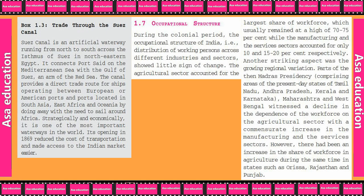Another striking aspect was the growing regional variation. Parts of the then Madras Presidency — comprising areas of present-day Tamil Nadu, Andhra Pradesh, Kerala and Karnataka — Maharashtra and West Bengal witnessed a decline in the dependence of the workforce on the agriculture sector, with a corresponding increase in the manufacturing and services sectors.